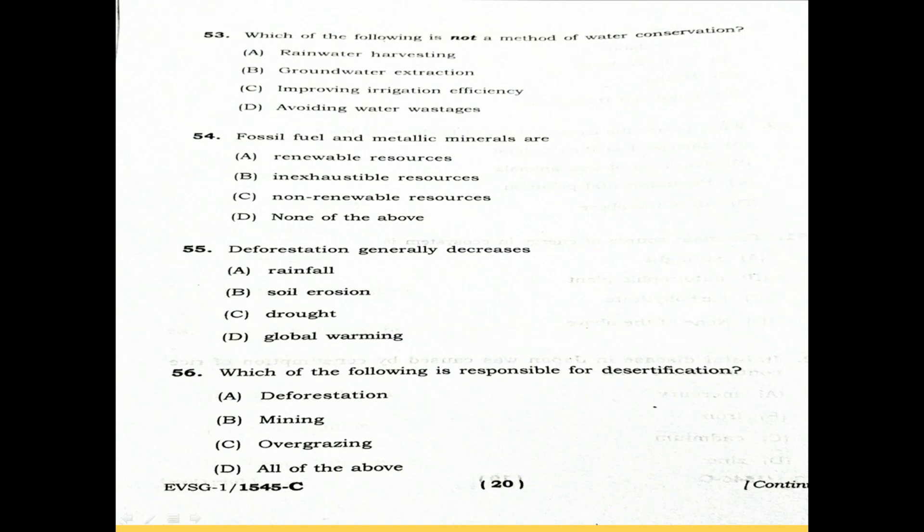Question 52: Which of the following is not a method of water conservation? Option A: Rainwater Harvesting. Option B: Groundwater Extraction. Option C: Improving Irrigation Efficiency. Option D: Avoiding Water Waste. The correct answer is Option B, Groundwater Extraction — this is not a method of water conservation.